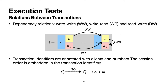To explain can-commit, we need to introduce some relations between transaction identifiers in the key-value store. Write-write (WW) says one transaction commits a newer version on the same key after another transaction. Write-read (WR) says a transaction directly reads from the version written by another transaction.